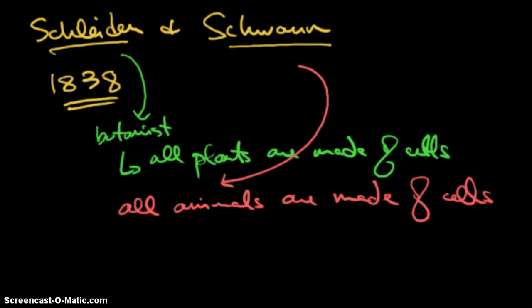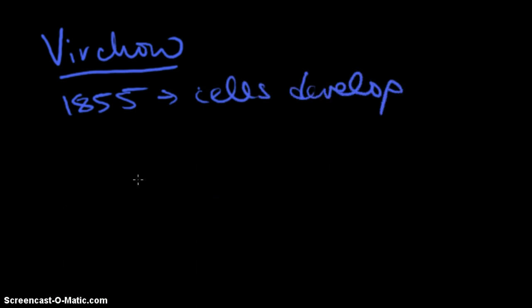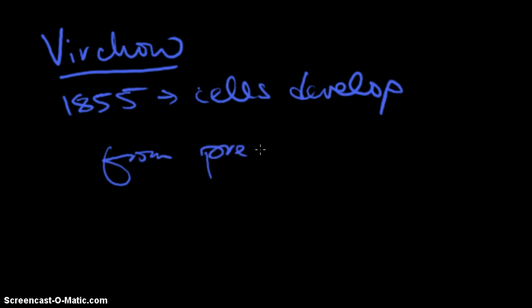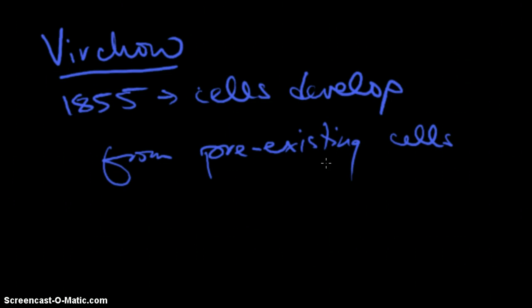The last scientist we need to talk about is Virchow. In 1855, he said that cells develop from pre-existing cells — all cells come from other cells. We can actually observe this under microscopes; we don't see cells coming out of non-living things, and we don't see life forming from non-living things. It has to come from other living things. If you have questions about that, be sure to ask so we can discuss them.